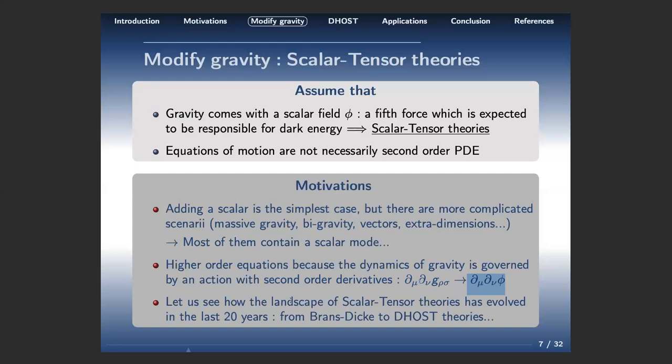With these ideas, many scalar-tensor theories have been constructed in the last 20 years, since the discovery of the accelerated expansion of the universe in 1998-99 motivated alternatives to the cosmological constant. The first part of my talk will show most of these models that appeared in the literature, from the Brans-Dicke model up to DHOST theories.